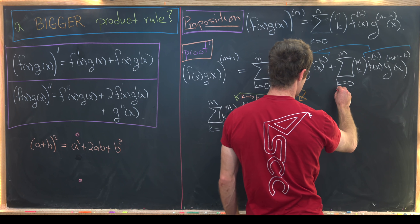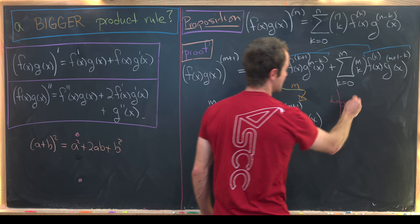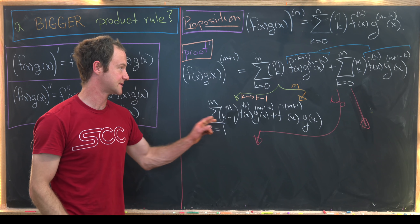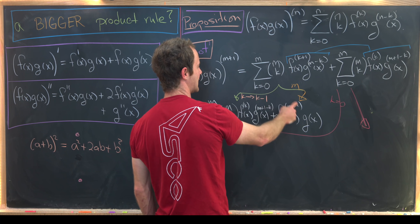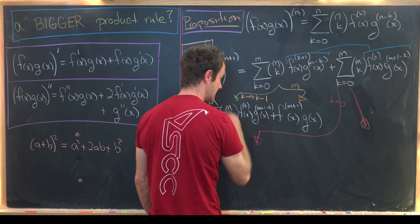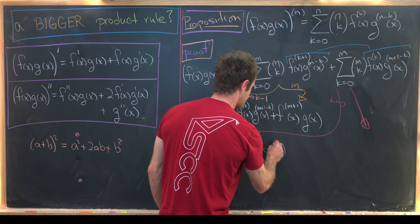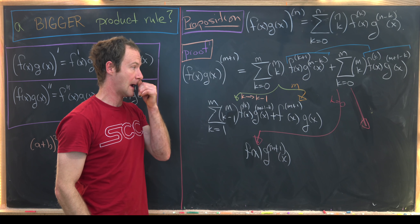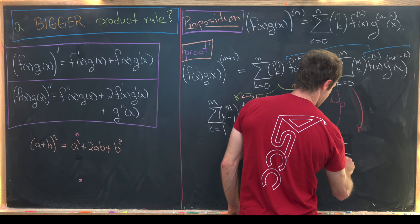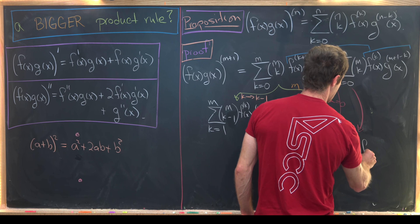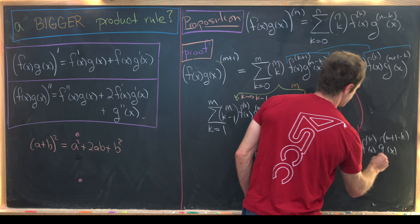For the second sum, let's bring out the k = 0 term. That gives (m choose 0) = 1, times f(x), times the (m+1)th derivative of g. For the remaining terms, we don't need to re-index; the sum goes from k = 1 to m of (m choose k) times the kth derivative of f times the (m+1−k)th derivative of g.